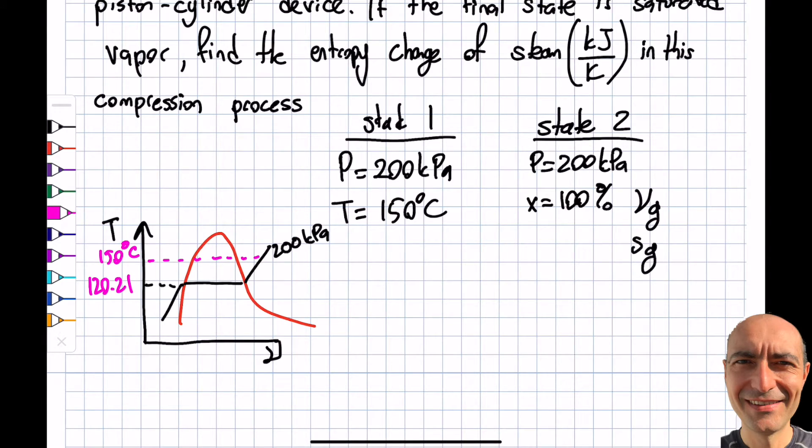Not a big deal. I'll look at table A6. I look for P equals 200, T equals 150, and I read my S value. I get 7.281 kilojoules per kilogram Kelvin. That's my S1 for state 1.